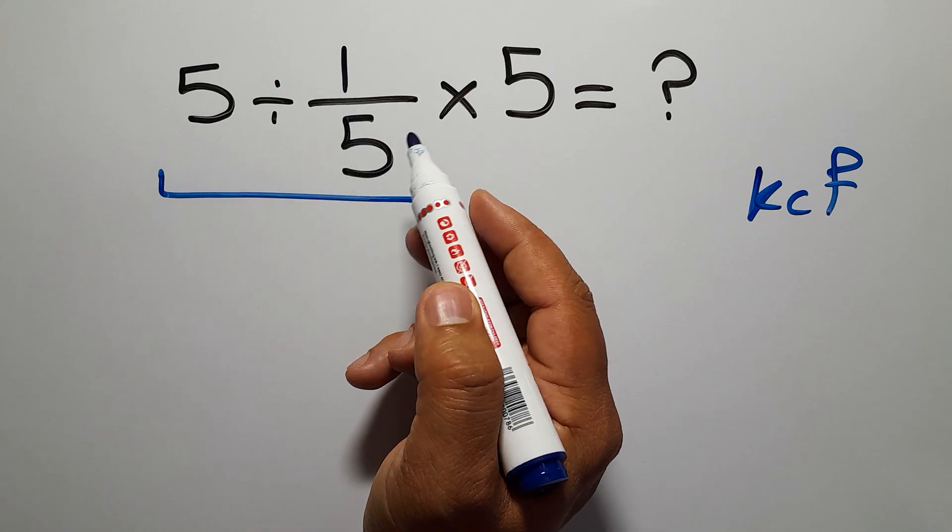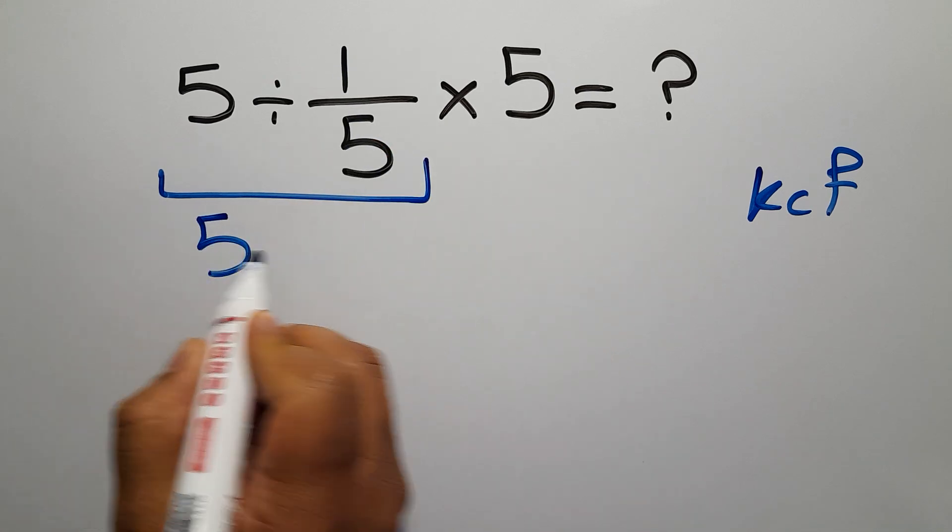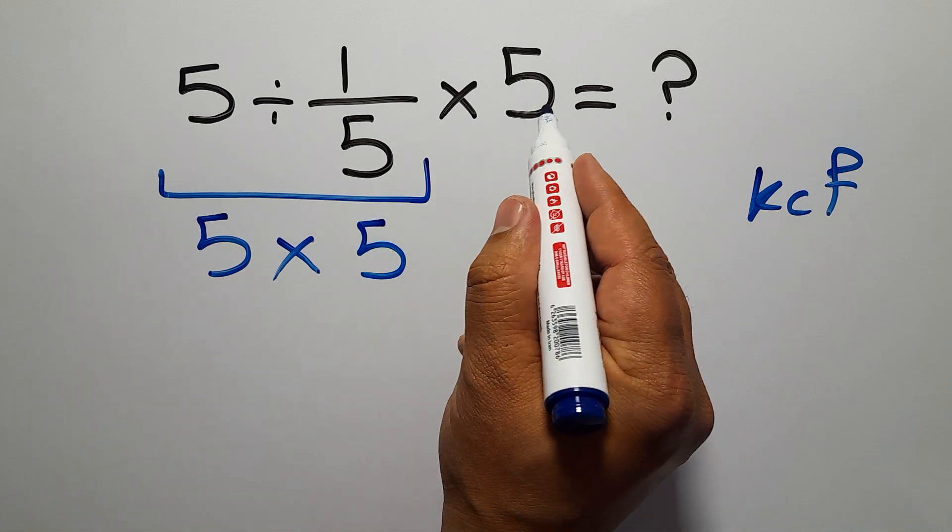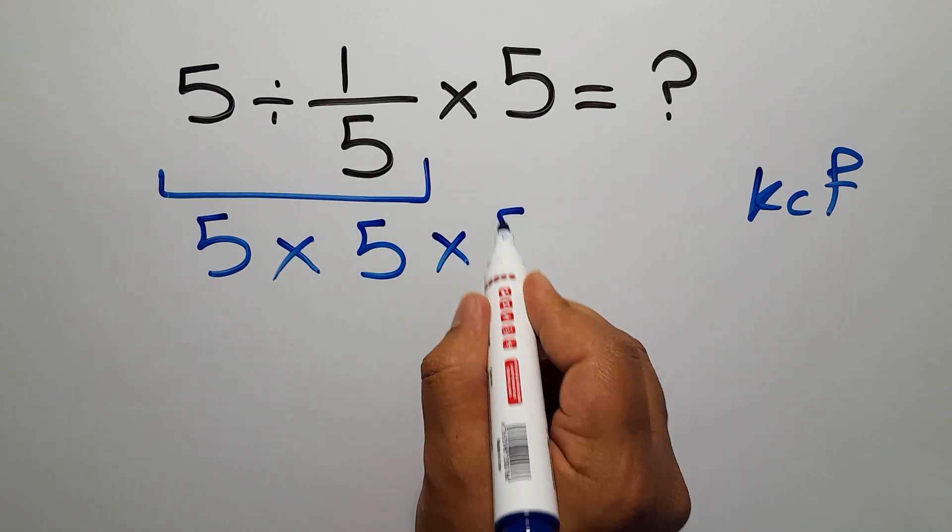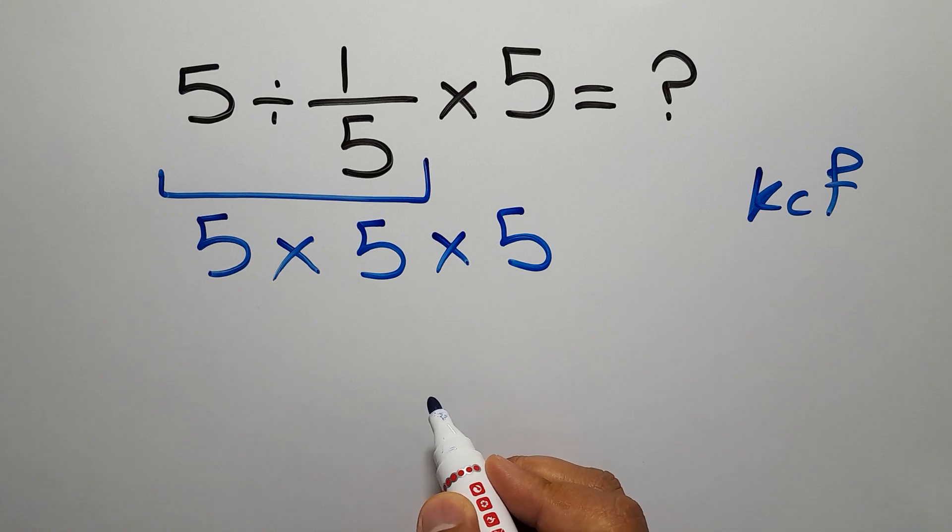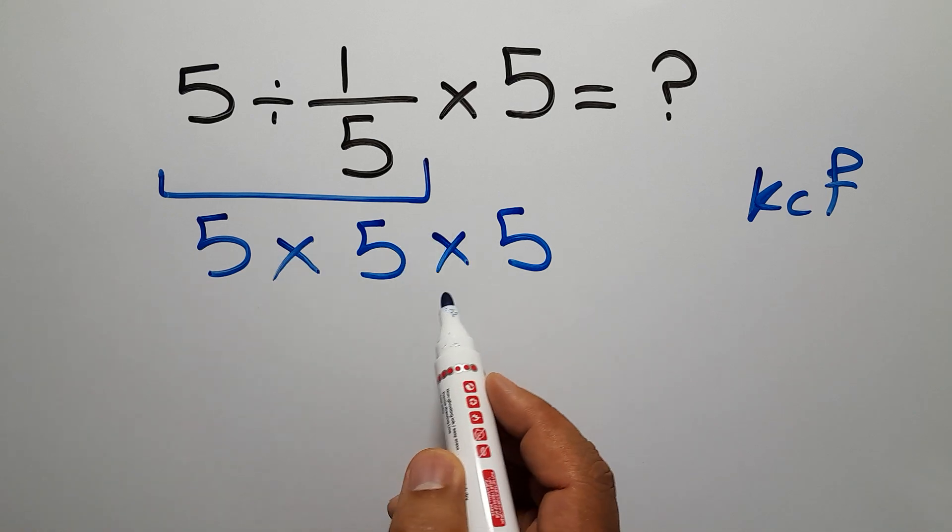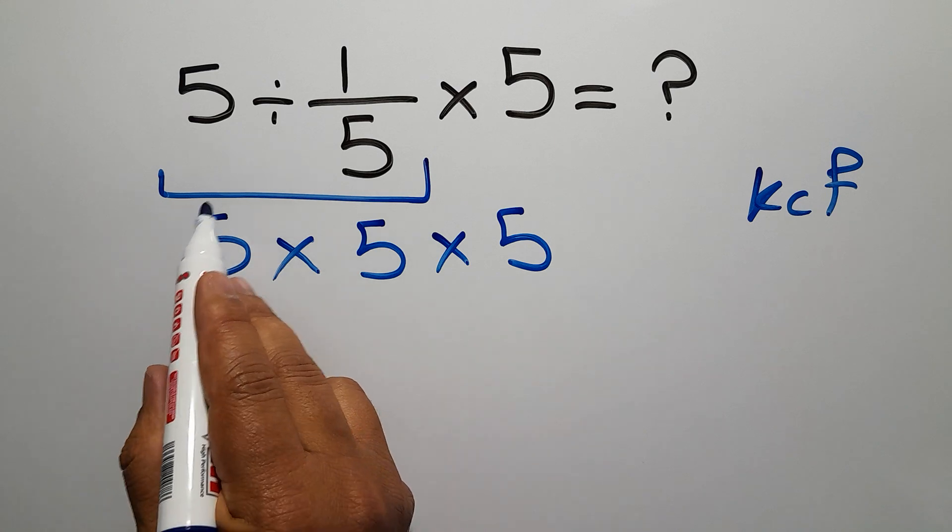So we can write 5 times 5, and again we have times 5. Now we have two multiplications, and we have to go from left to right.